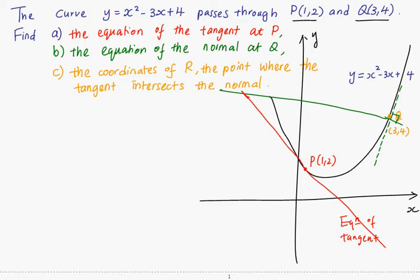And we understand that these two lines will intersect. So in part c, you are asked to find the coordinates of R, which is the point where the red line, the tangent, intercepts the green line, the normal. So this is what the whole question is all about.